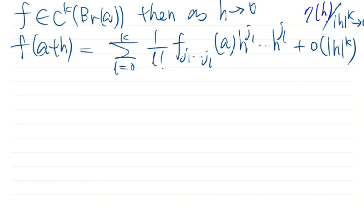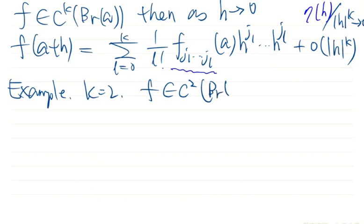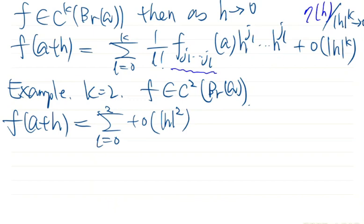But this formula looks somewhat elegant, but maybe for some students you will find the notation, in particular this one, difficult. So we consider an example, we consider the case of K equal to two, that is F is C^2 near A. Let's see what this is. So F(A+H), this is sum L from zero to two, and so we need to expand this. The sum has three terms: L equal to zero, L equal to one, and L equal to two.